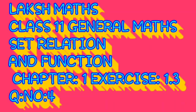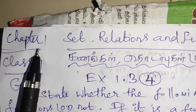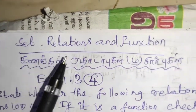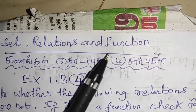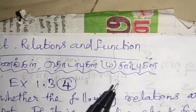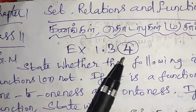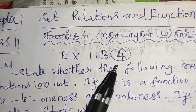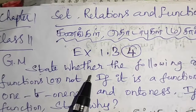Hello students. This is Class 11, Chapter 1: Sets, Relations and Functions. We will look at Exercise 1.3, the 4th one. In the exercise, there are 2-mark, 3-mark, and 5-mark questions. It is a very very important exercise.